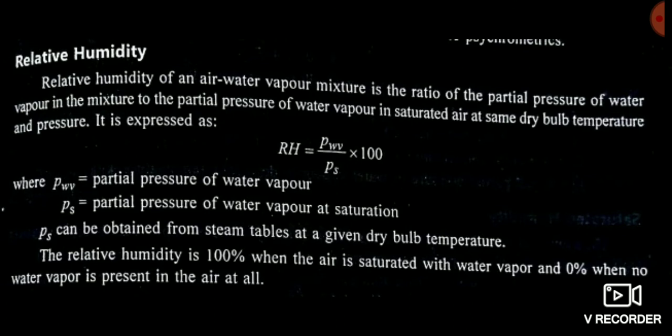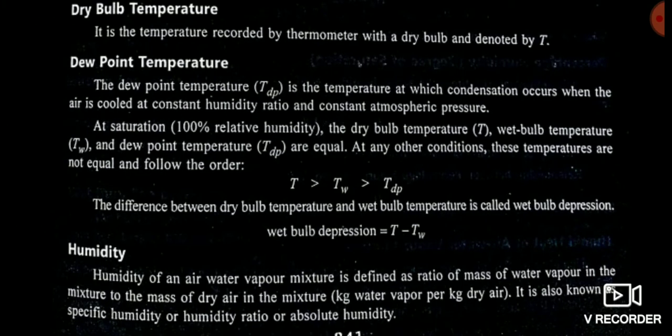Now, an important relationship: you should know the relationship between dry bulb temperature, dew point temperature, and wet bulb temperature. The dry bulb temperature is greater than the wet bulb temperature, which in turn is greater than the dew point temperature.